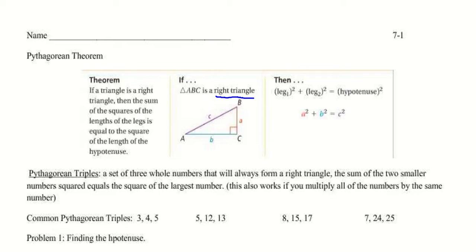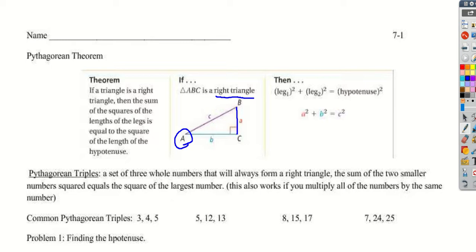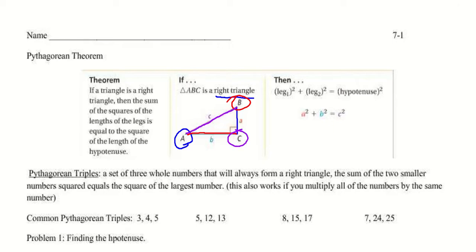Just so we're aware of the letter conventions: side a is always located across from angle A, side b is across from angle B, and side c is across from angle C. Similarly, if we had a triangle called DEF, side f is across from angle F, side e from angle E, and side d from angle D. Sides get lowercase letters and angles get capital letters.